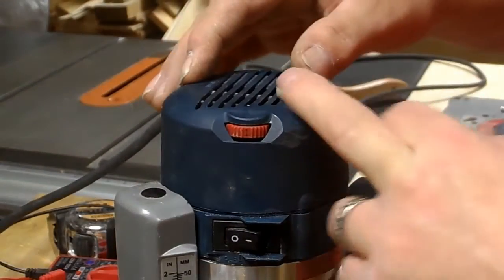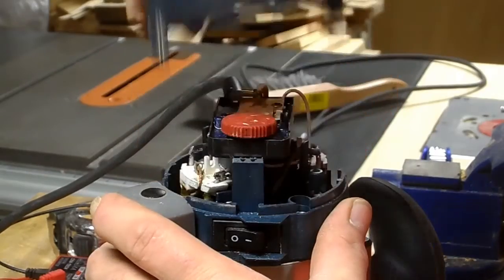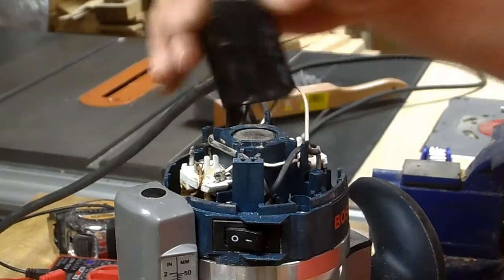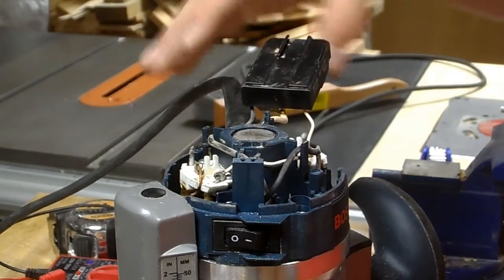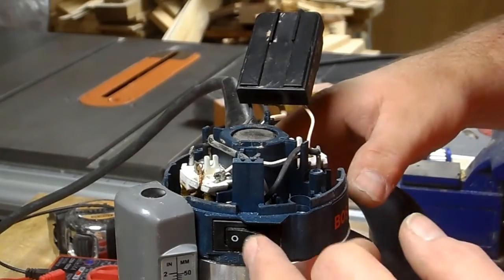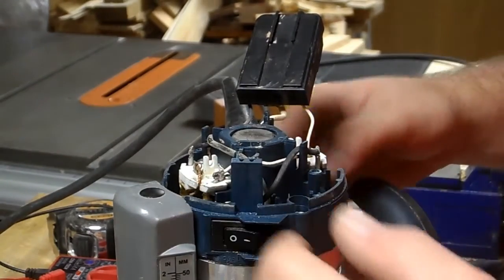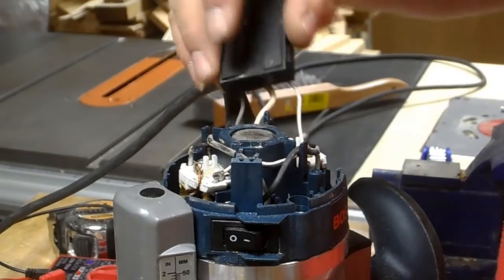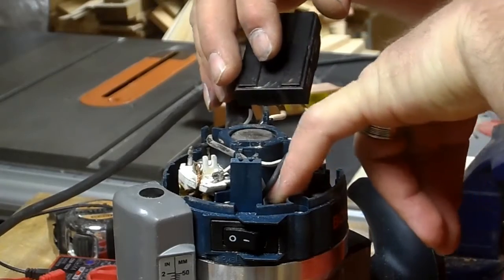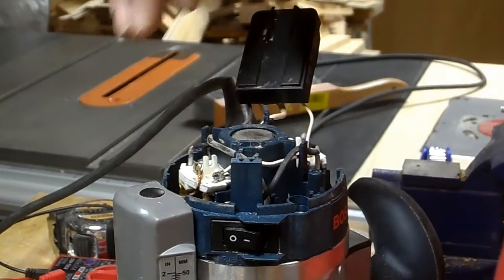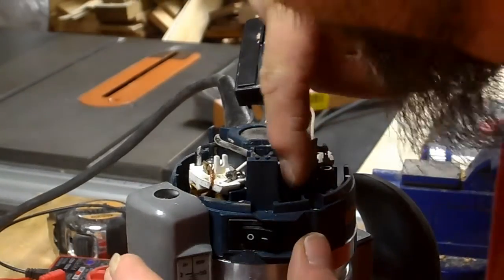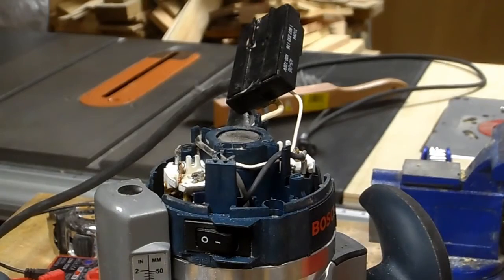All right, so there's two screws right here. I've already got those out. This top cover comes off. This is the speed control right here. So first thing I want to check is that this switch is opening and closing the way it's supposed to. The black wire coming in off my cord lands on a terminal right here, and the other black wire should be coming off the switch.